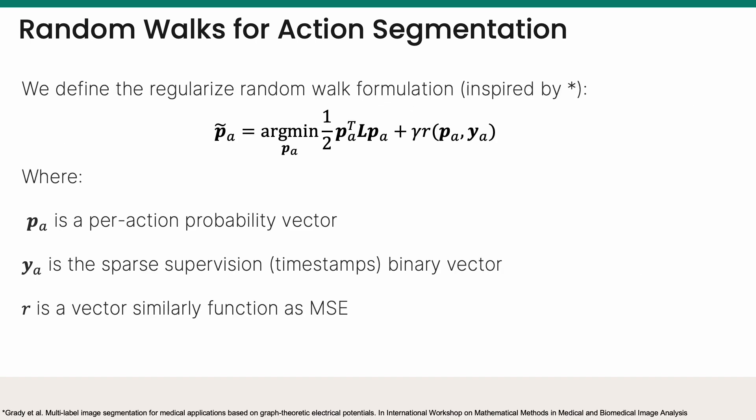Next, we define the following sparse system of linear equations for every action A. PA is the per-action probability vector. YA is the sparse binary timestamps supervision vector. R is the similarity function, such as MSE. Solving the following system of equations for every action will yield a per-frame action probability distribution.